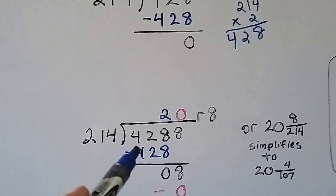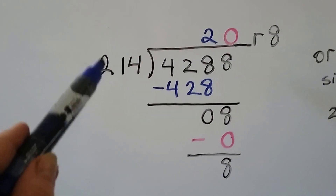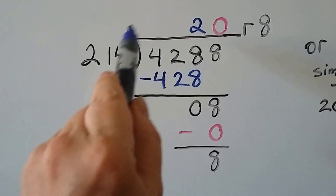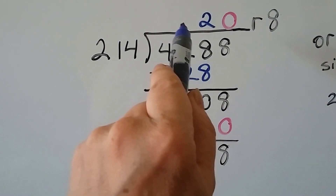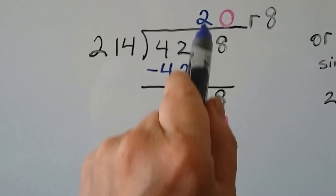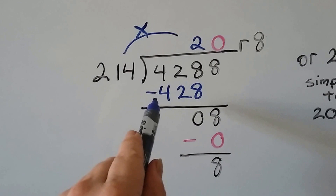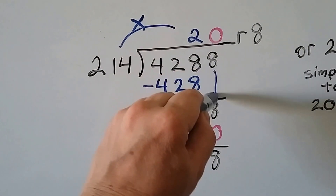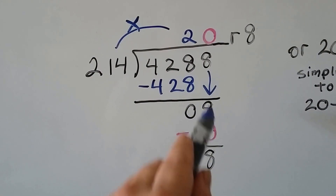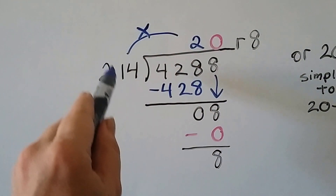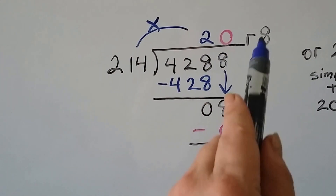Now instead of 428, what if we had 4,288? Can 214 fit into 4? No. Can 214 fit into 42? No. But we know it can fit into the 428 two times. 214 times 2 is 428; we subtract and get 0. Now it's the 8's turn to come down. How many times can 214 fit into 8? None. So we put a 0 up here. 0 times 214 is 0; we subtract and get 8. So our answer is 20 with a remainder of 8.